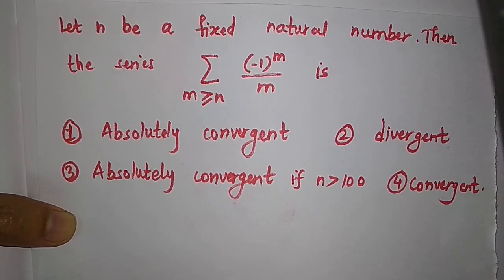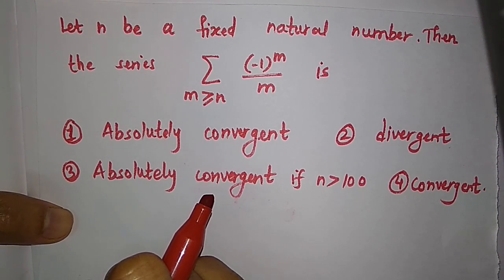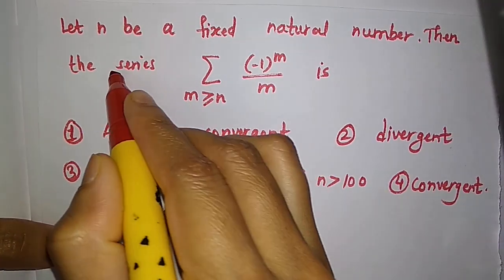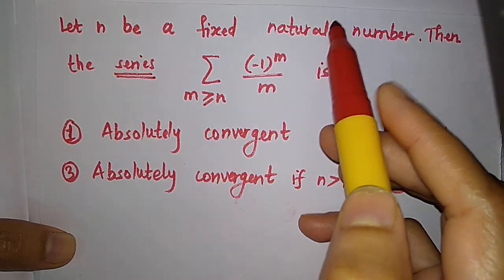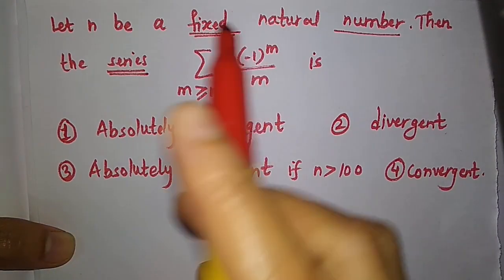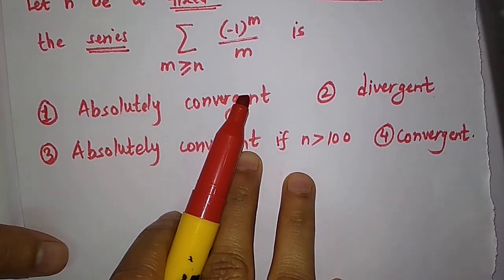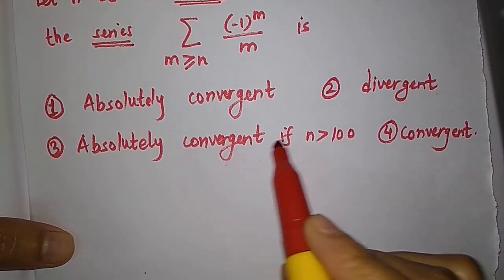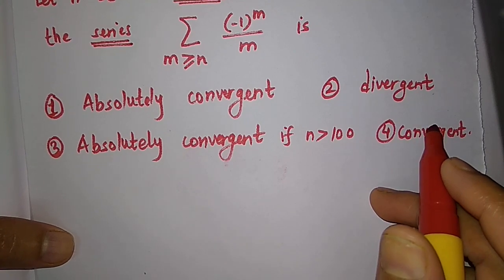Hello friends, in this video I am going to solve a question from NET 2019 December Part C. The question is about a series where we are given n as a fixed natural number, and the series is (-1)^m divided by m. The options are: it is absolutely convergent, divergent, absolutely convergent if n is greater than 100, or convergent.